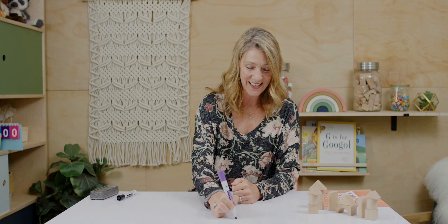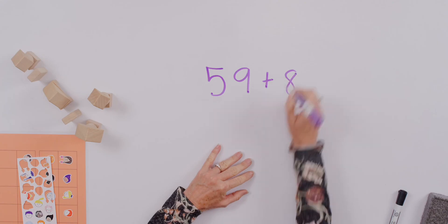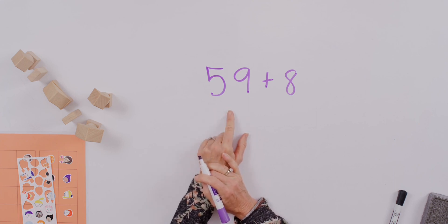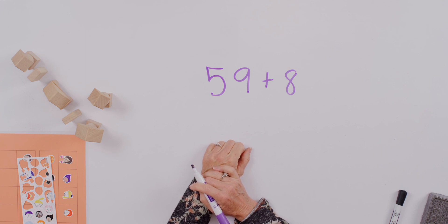Let's do another one. How about fifty-nine plus eight? Now, many of you might just be able to think of the fifty-nine as sixty, which means you got one from the eight, but some of us need to show it.